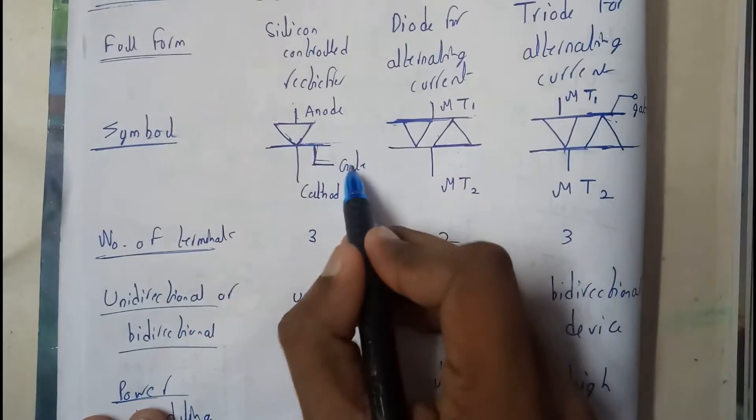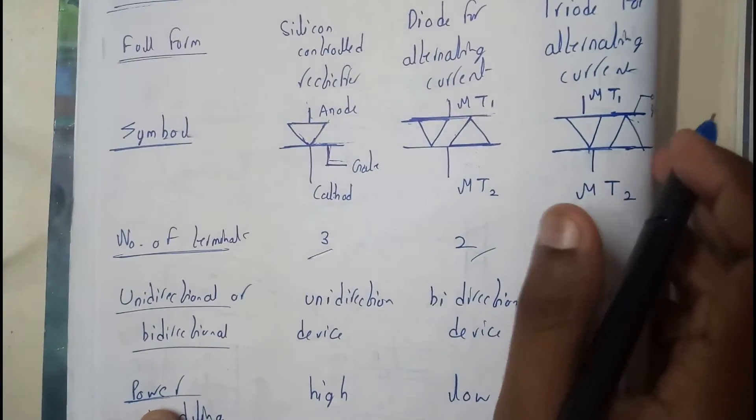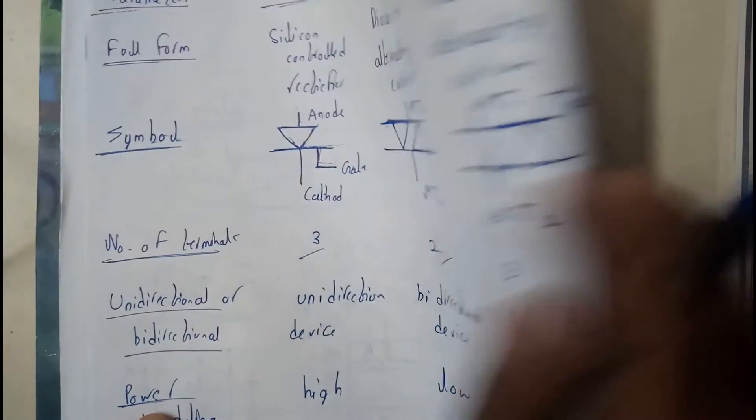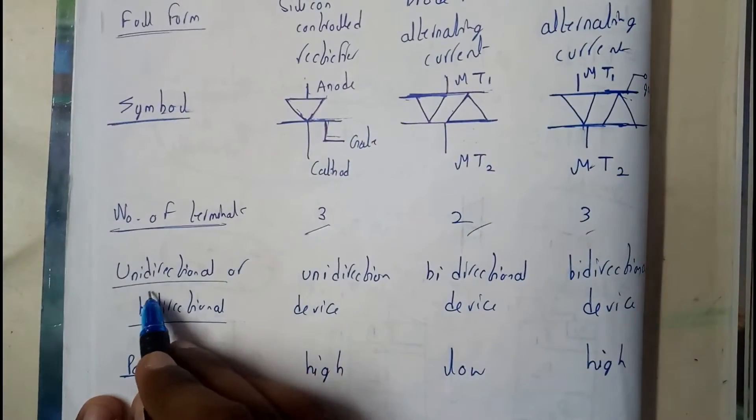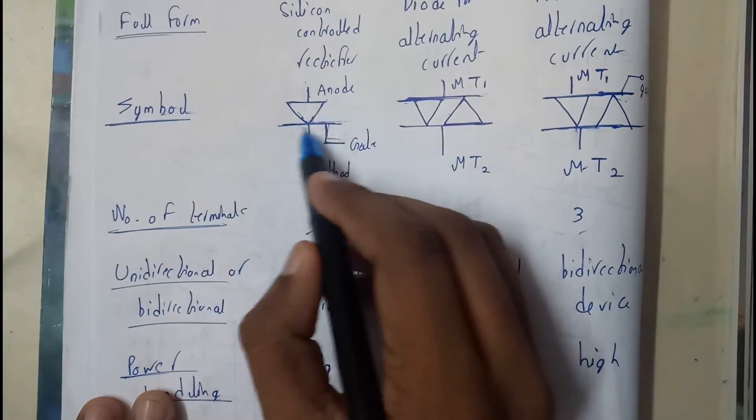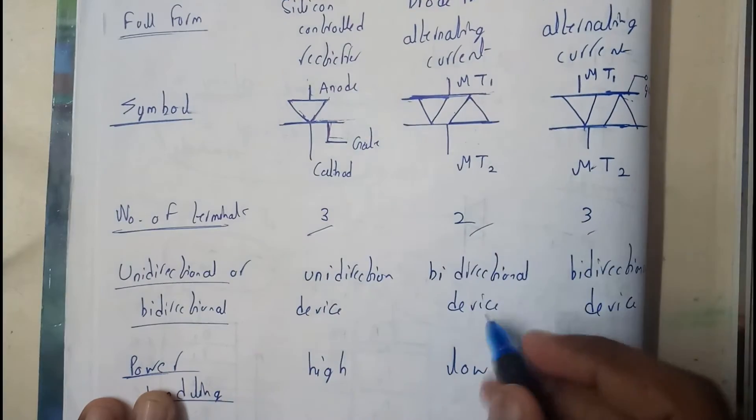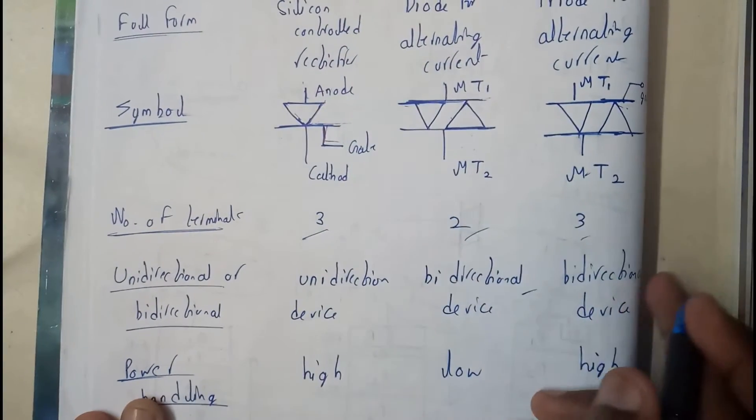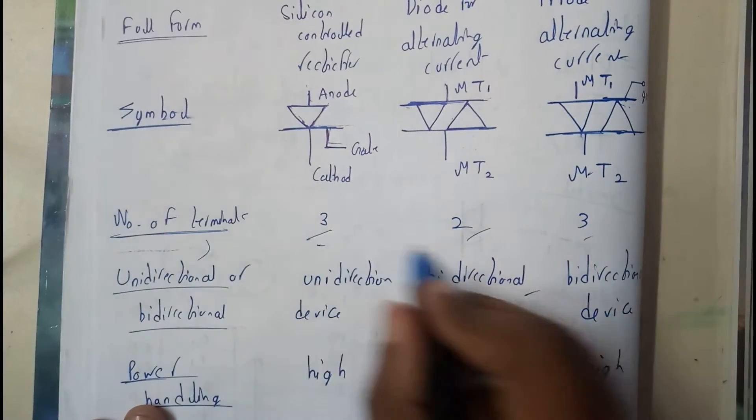Moving on to number of terminals: SCR has 3 terminals, DIAC has 2 terminals, and TRIAC has 3 terminals. SCR is unidirectional as there is only one PN diode. DIAC and TRIAC are bidirectional as they have 2 diodes each. You can also write the number of diodes: 1 for SCR, 2 for DIAC, and 2 for TRIAC.